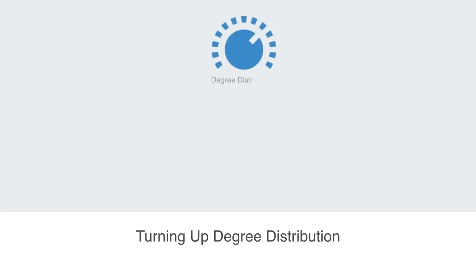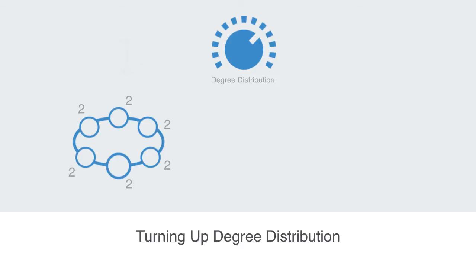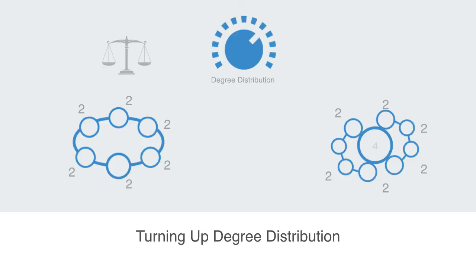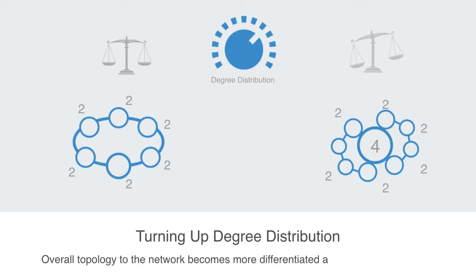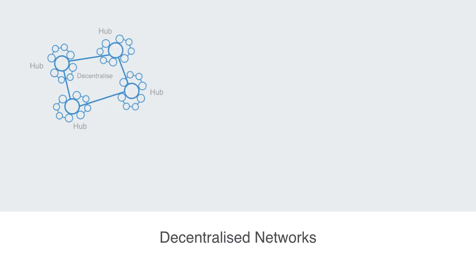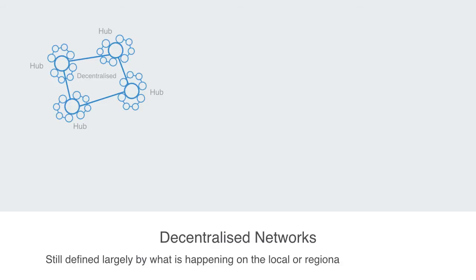In this module we're going to continue our discussion about how different degree distributions within a network can generate different types of networks. We previously looked at what happens when we have a low level of diversity between nodes' degree of connectivity, exploring distributed networks with a very egalitarian degree distribution. As we turn up our degree distribution, allowing for nodes with a much higher degree of connectivity, the overall topology becomes more differentiated as local clusters emerge, with some nodes playing a central role defined as a hub. We'll call this model a decentralized network — it may have some overall center, but is still defined largely by what happens on the local or regional level.